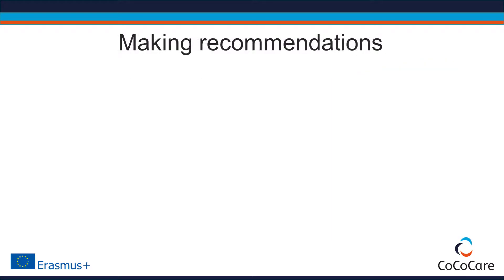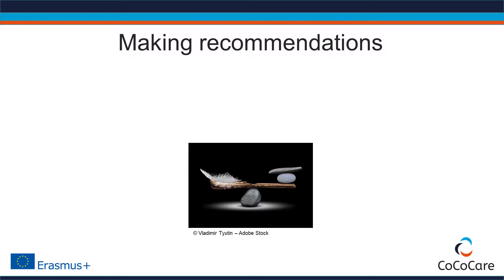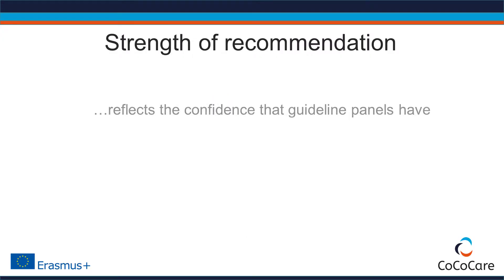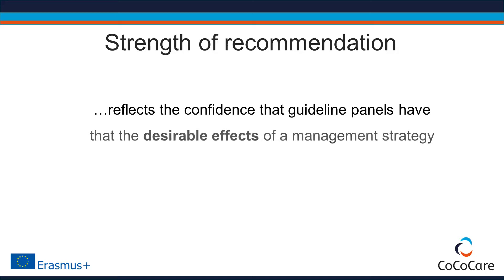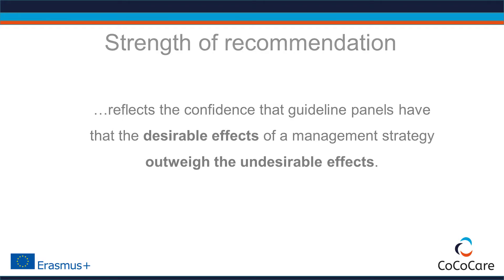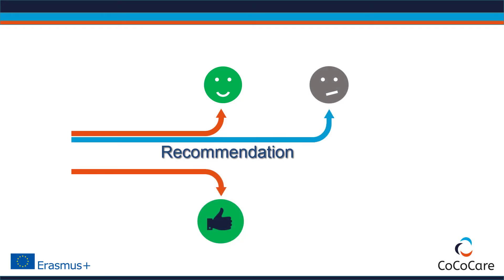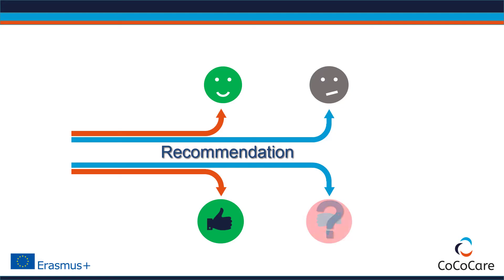The final step of a guideline panel is to make recommendations. GRADE recommends two types of recommendations: strong or weak recommendations for or against an intervention. The strength of a recommendation reflects the confidence that guideline panels have that the desirable effects of a management strategy outweigh the undesirable effects. A strong recommendation means that benefits clearly outweigh harms. A weak recommendation means that there is some uncertainty about the balance of benefits and harms, and that some patients might choose not to have an intervention.